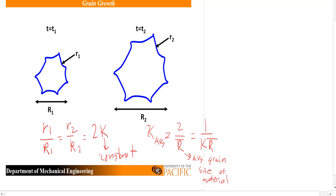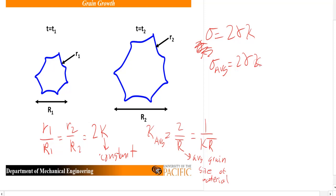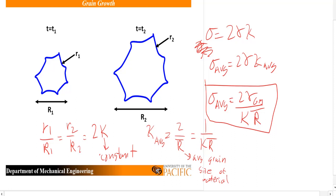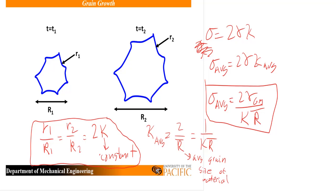More importantly, we had this relationship previously that our stress is equal to 2 gamma times kappa. So your average stress is going to be 2 gamma times your kappa average. We can now plug in: your average stress is going to be equal to 2 gamma of your grain boundary over K·R-bar, your average grain size. This is a rough, semi-empirical approximation based on the ratio of the radius of curvature over your grain size, but this is the important expression we eventually get to.